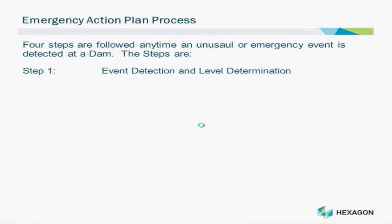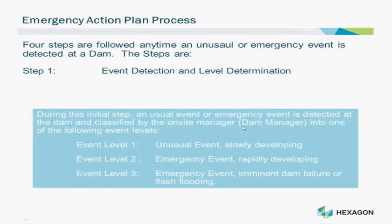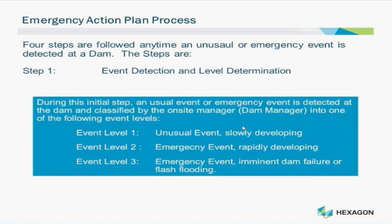A dam Emergency Action Plan is usually made up of four key steps. The first step is event detection and level determination — that is, determining there is an emergency event and the size or impact of the event. The on-site manager, usually the dam manager, assesses the event and classifies it into a specific event level: Level 1 — an unusual event has occurred and is slightly developing into a larger event; Level 2 — an emergency event has occurred and is rapidly developing; Level 3 — an emergency event has occurred and imminent dam failure or flash flooding is very likely.